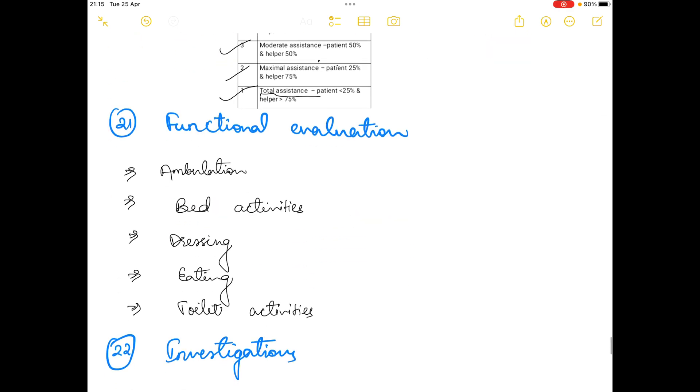The next thing is functional evaluation. In functional evaluation, you need to evaluate ambulation, bed activities, dressing, eating, toilet activities. In functional evaluation, all you need to assess is their activities of daily living, ADL.